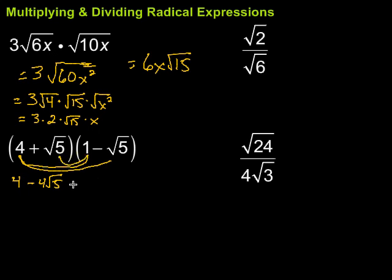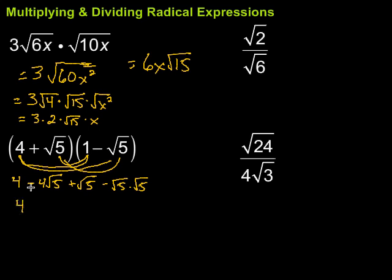Then square root of 5 times 1 gives us plus the square root of 5. Then square root of 5 times minus the square root of 5 — let me write that out so we don't lose track — that's minus the square root of 5 times the square root of 5. Going back to simplify: we have minus 4 times the square root of 5 plus the square root of 5. Those are like radicals, so minus 4 of those plus 1 gives minus 3 square root of 5.